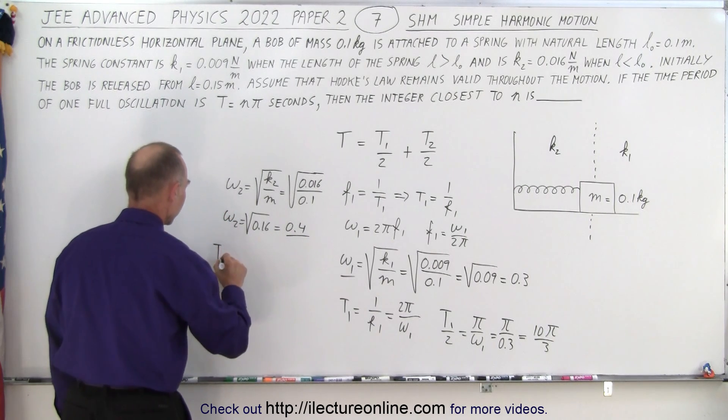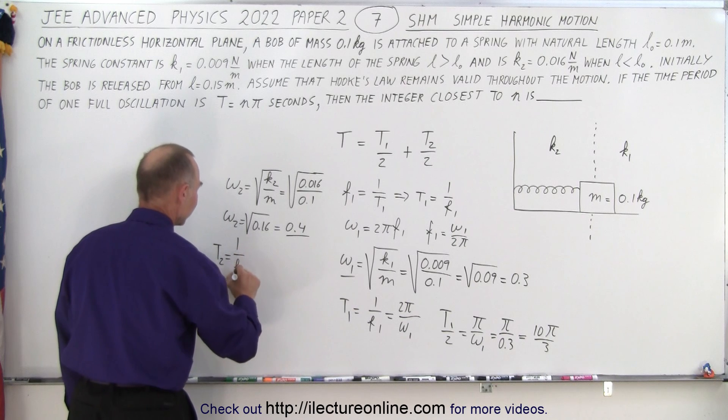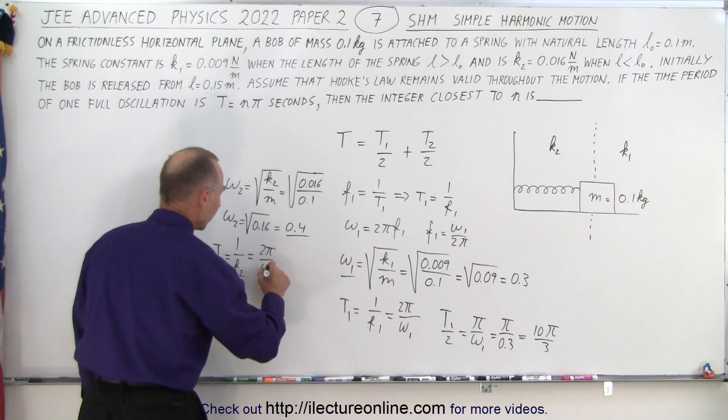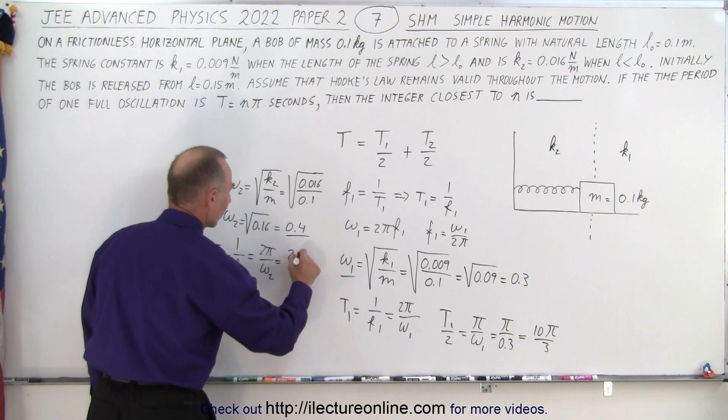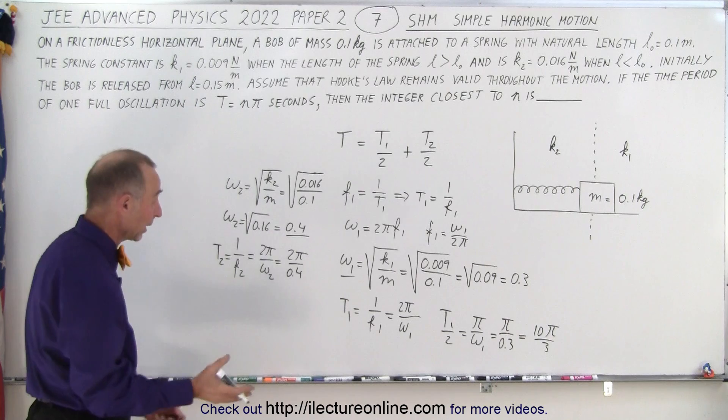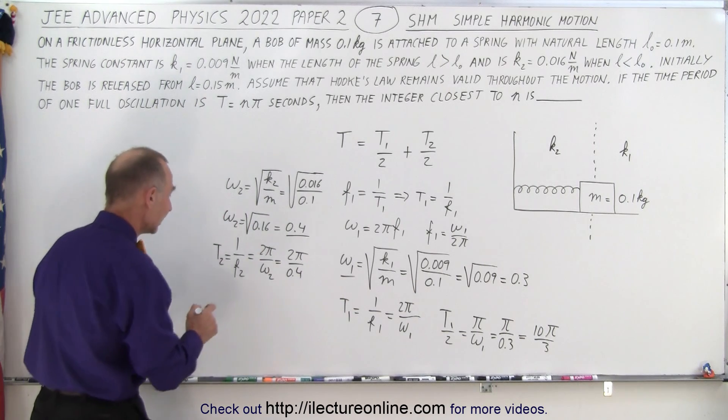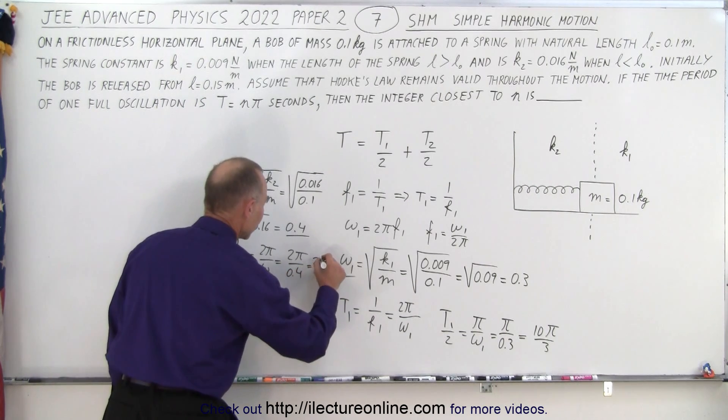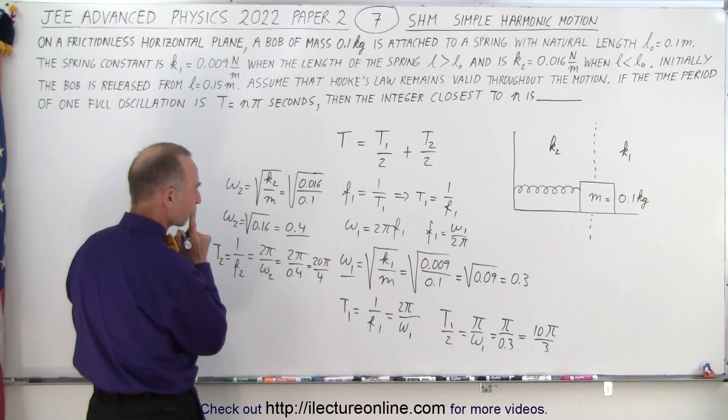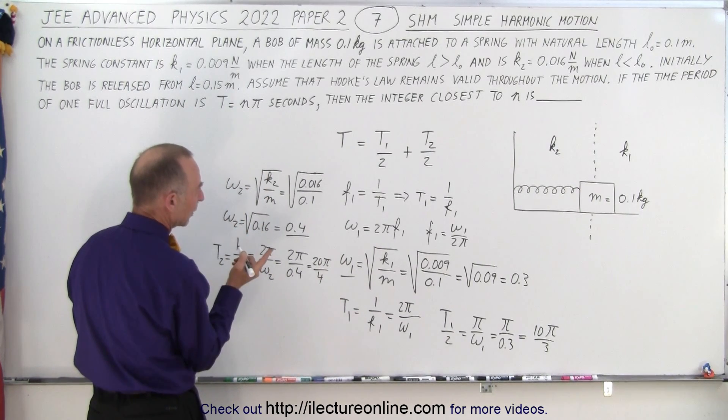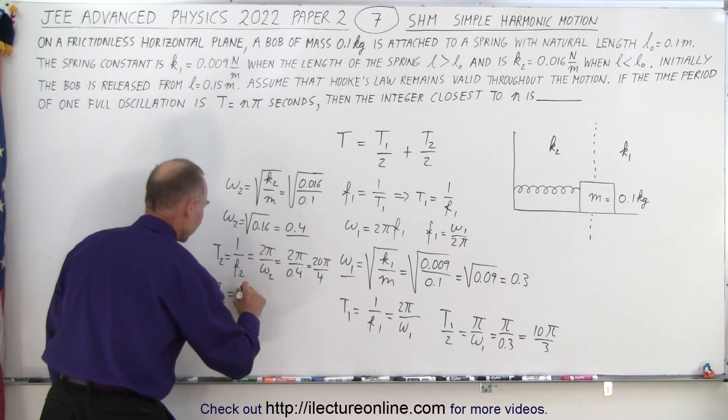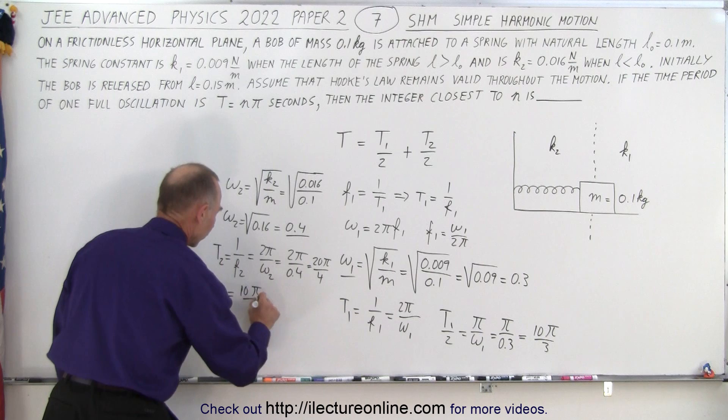So that means that t2 which is equal to 1 over f2 which is equal to 2 pi over omega 2 which is equal to 2 pi over 0.4. Again multiply both the top and the bottom by 10. We can say that's equal to 20 pi over 4. Maybe we can say it's 10 pi over 2. So t2 is equal to 10 pi over 2.